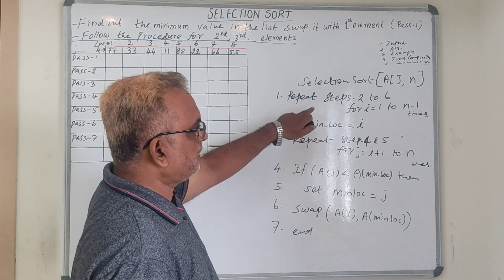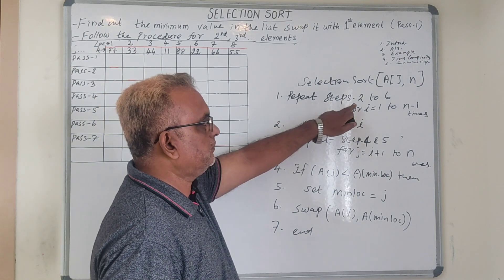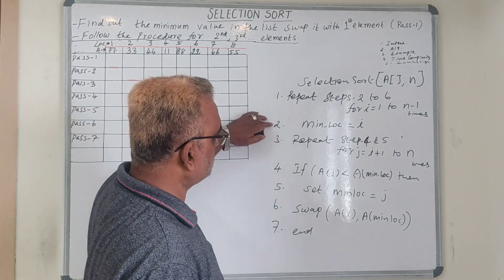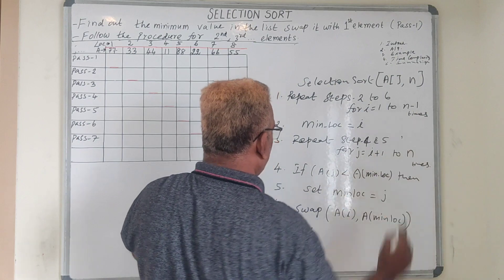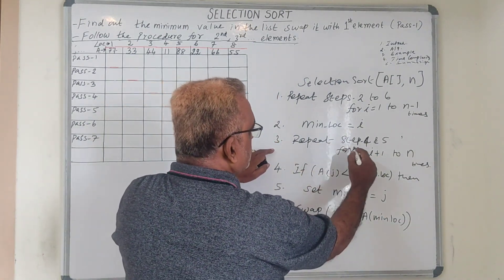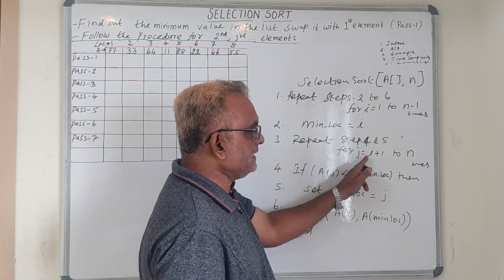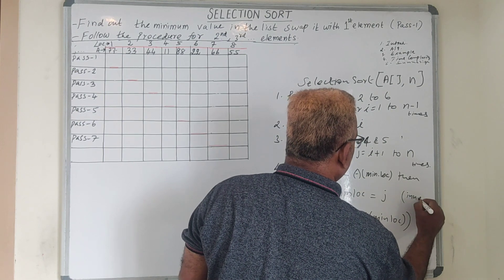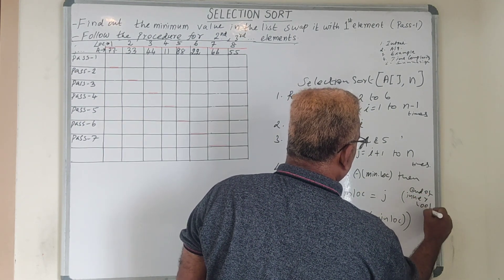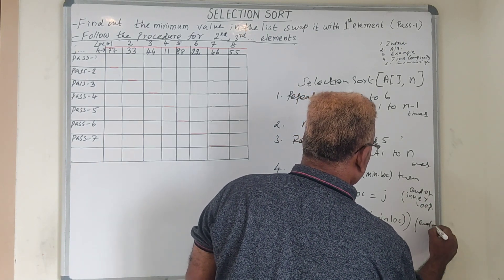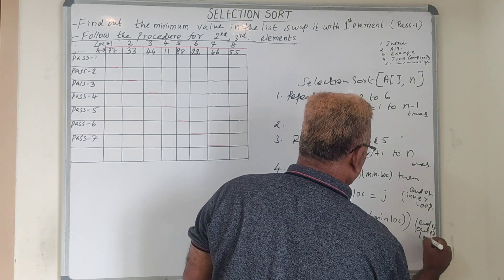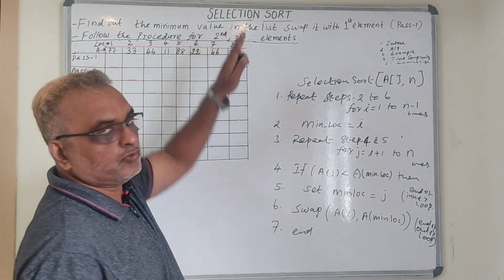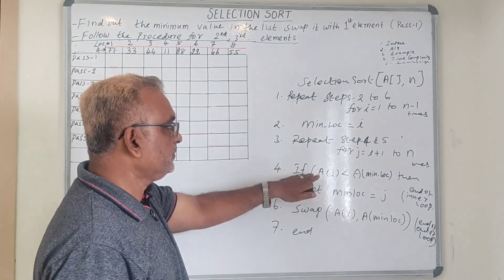We have two loops here. Steps 2 to 6 are performed for i equal to 1 to n minus 1. Within that, steps 4 and 5 are performed for j equal to i plus 1 to n — that is the inner loop. The inner loop finds out the minimum value. The second operation is swapping.